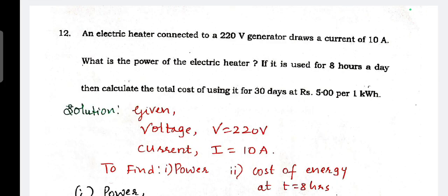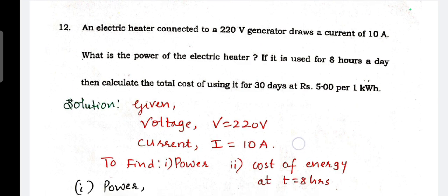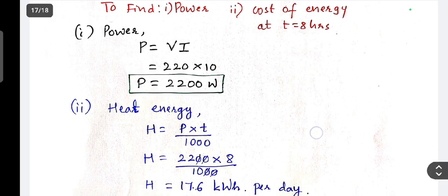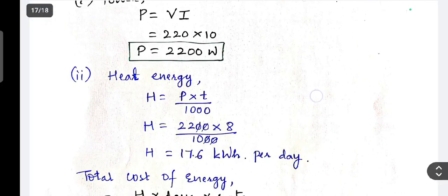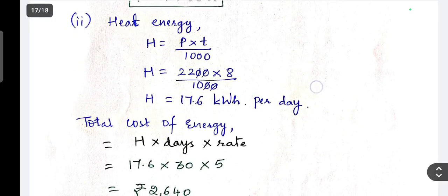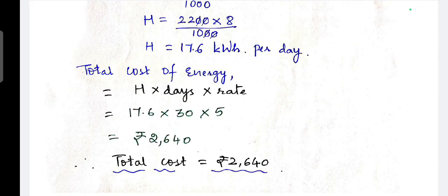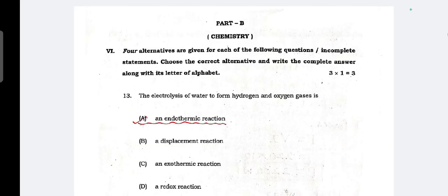Next question. An electric heater connected to 220 volt generator draws a current of 10 ampere. What is the power of electric heater? If it is used for 8 hours a day, then calculate the total cost using it for 30 days at 5 rupees per 1 kilowatt. So this is the answer. Next, Part B, Chemistry.